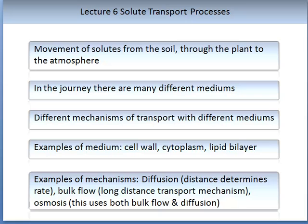Different mechanisms of transport will involve different mediums. Examples of a medium include a cell wall, a cytoplasm, a lipid bilayer, or the internal xylem structures. A mechanism is such as diffusion. In transpiration, there are two principal mechanisms that enable long distance transport of water and solutes to occur through the plant.